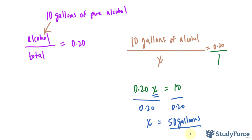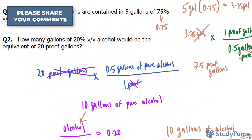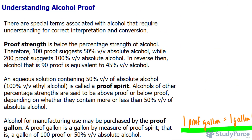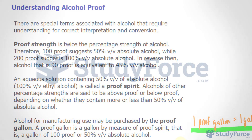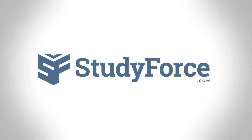So you need 50 gallons of solution that contains 20% alcohol to produce 20 proof gallons. And there you have it. I hope you can now understand what alcohol proof is. If you still have further questions, feel free to leave them in the comment section below or use our website. Thank you again for watching.